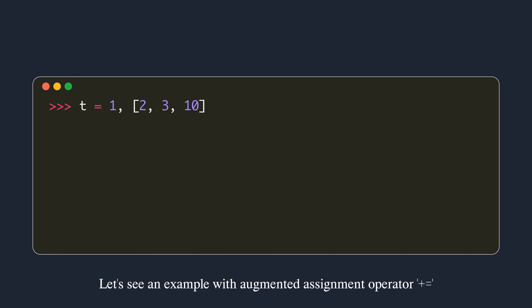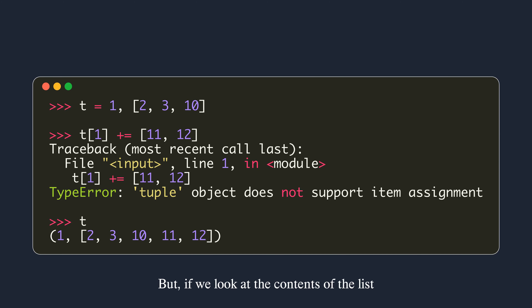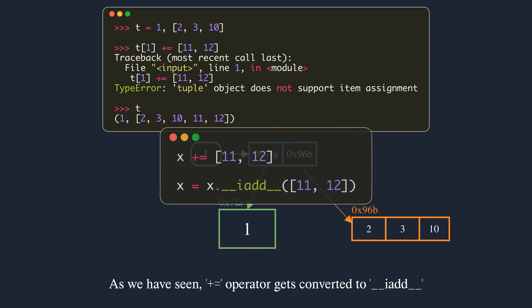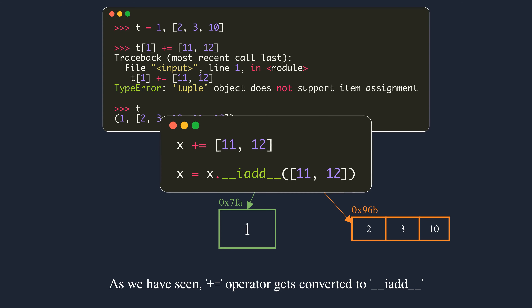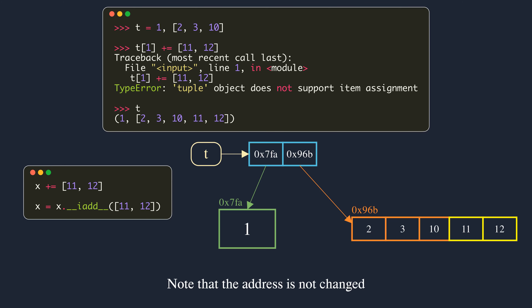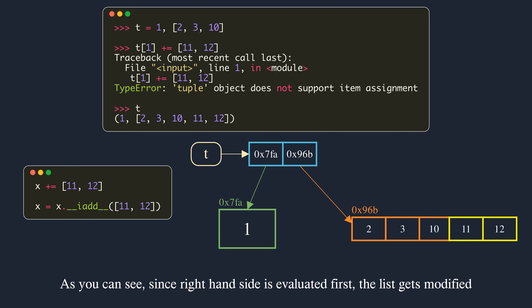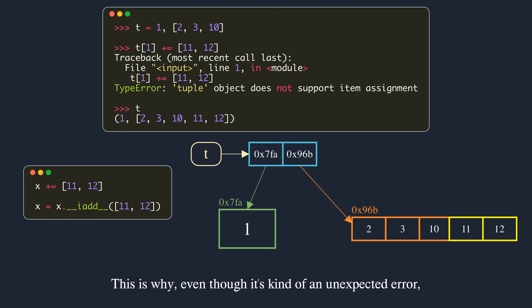When we use the append method, only the list object is modified, not the tuple. Now consider using the plus-equals augmented assignment operator: when we try to extend the list with plus-equals, an exception is raised — but if we look at the contents of the list, it's actually been modified. Why? The plus-equals operator calls __iadd__, which extends the existing list. After the right-hand side is evaluated, Python tries to assign the address back into the tuple. Note that the address hasn't changed — it is effectively assigning the same address back, which is a no-operation. But this assignment still causes the exception. Since the right-hand side is evaluated first, the list gets modified. This behavior is part of Python's data model.